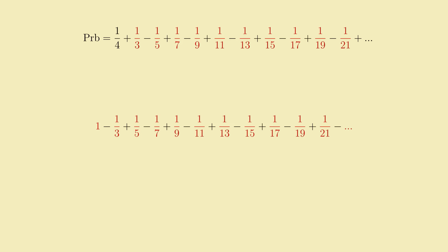Alternating, adding, and subtracting 1 over every odd number. It's a bit of a tangent to explain why, but it turns out this series sums to pi over 4.